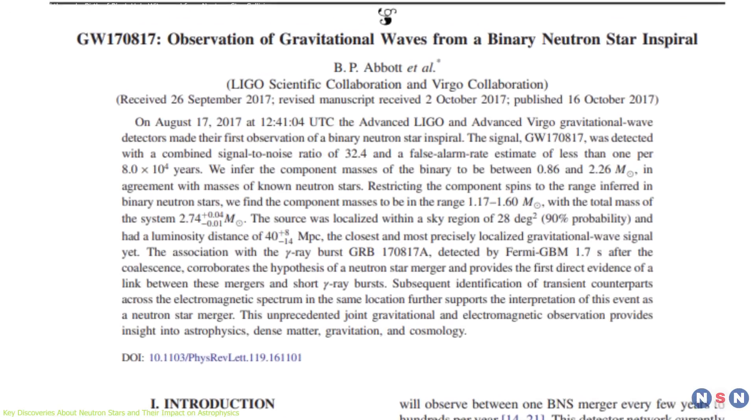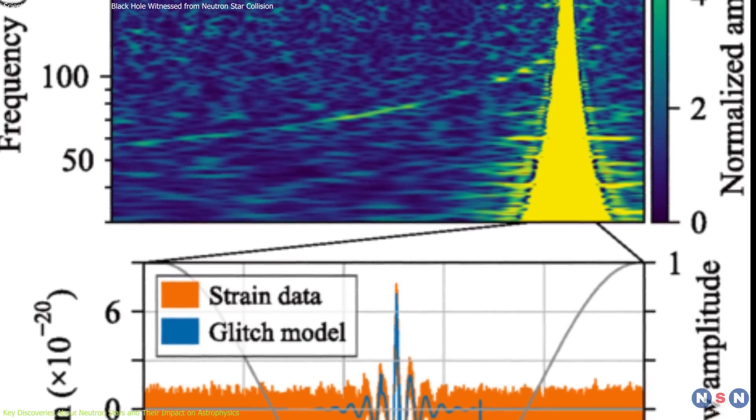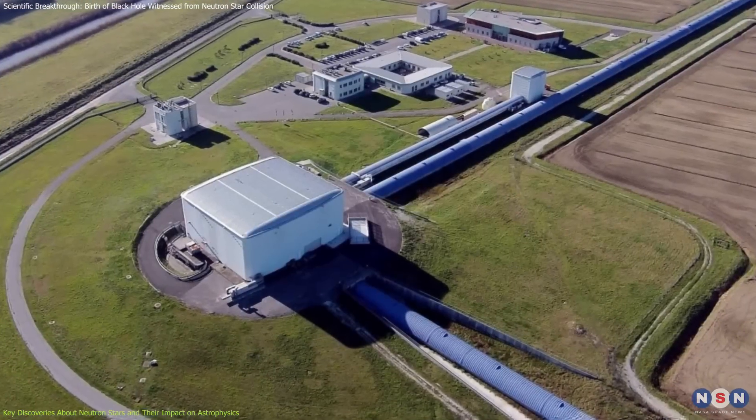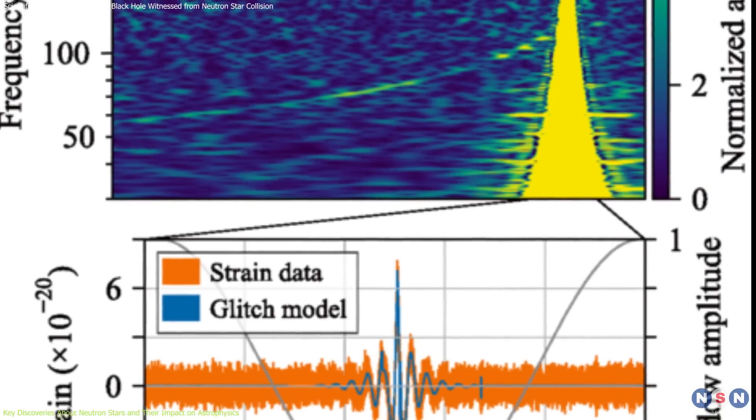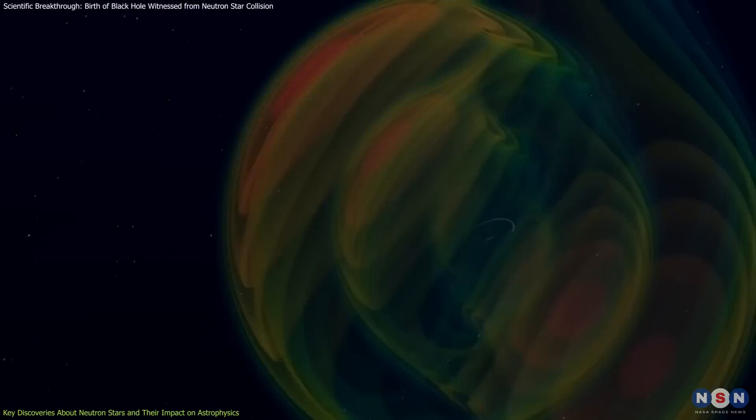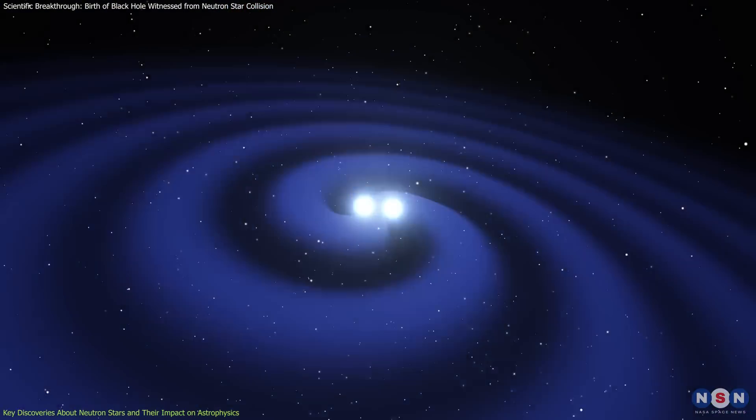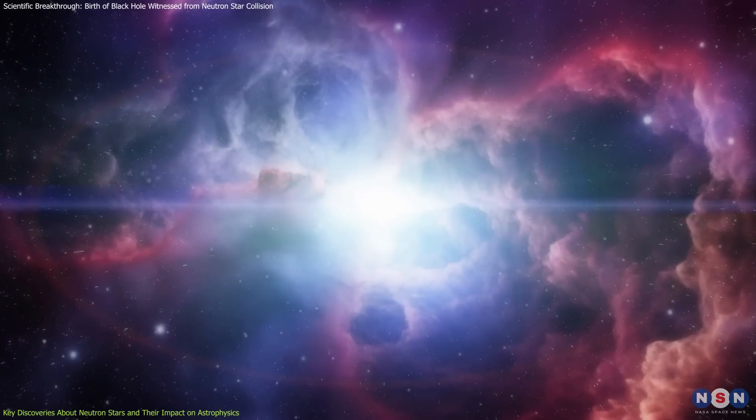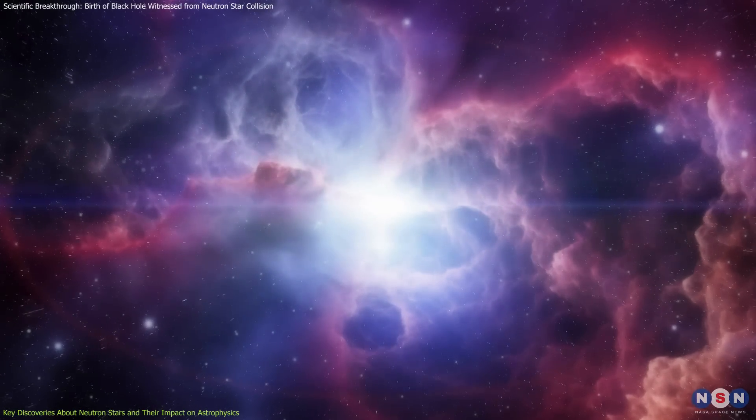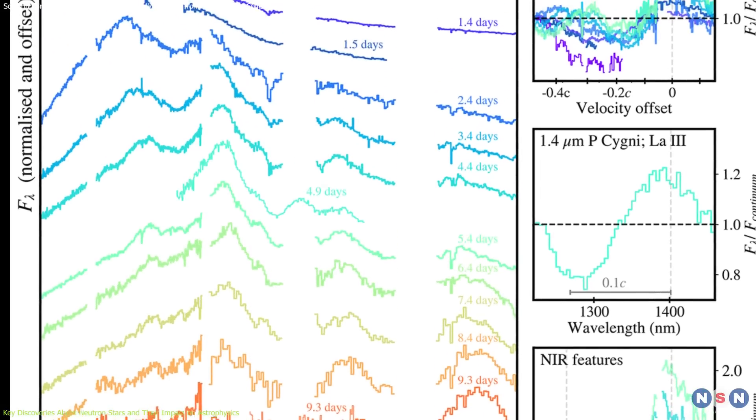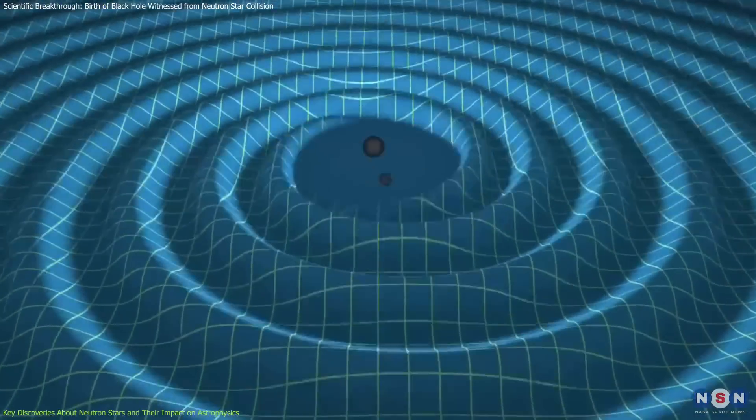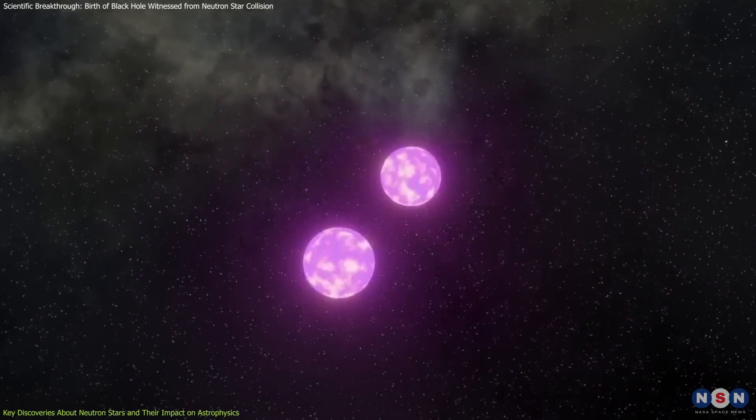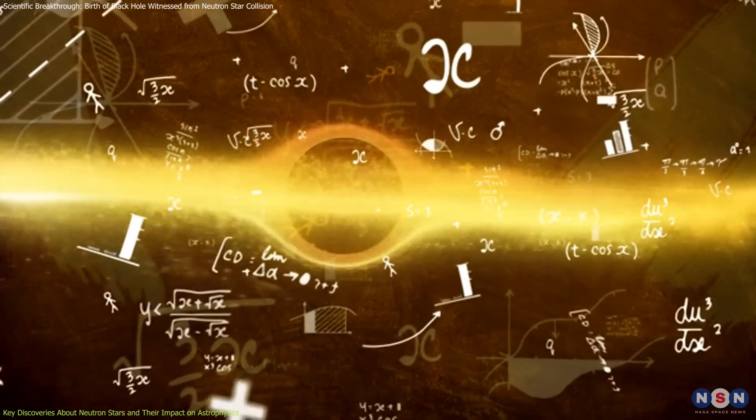Another major milestone came in 2017, with the first detection of gravitational waves from a neutron star merger. This observation, made by the LIGO and Virgo Observatories, marked the first time that gravitational waves, light, and gamma rays were detected from the same cosmic event. It allowed scientists to not only explore the physics of neutron stars in collision, but also to examine how such events contribute to the formation of heavy elements. This discovery expanded our understanding of gravitational waves, previously observed primarily from black hole mergers, and demonstrated the unique ways neutron star collisions offer insights into areas of physics beyond even black holes.